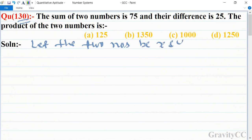According to the question, given that the sum of the numbers is equal to 75 and their difference is equal to 25. So what is the product of those two numbers? This one is the first equation.